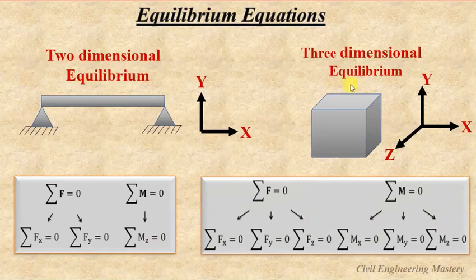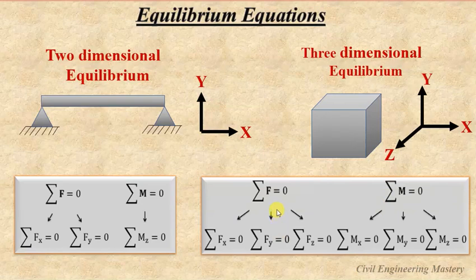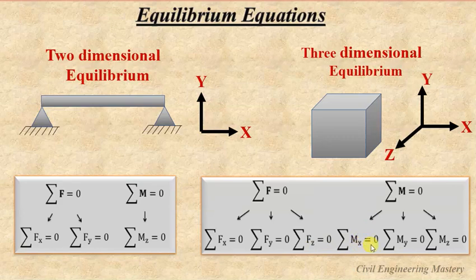For a three-dimensional element, we have six possible equilibrium equations — three for forces and three for moments. The sum of forces in the x, y, and z directions each equals 0. Similarly, the sum of moments in the x direction equals 0, the sum of moments in the y direction equals 0, and the sum of moments in the z direction equals 0.